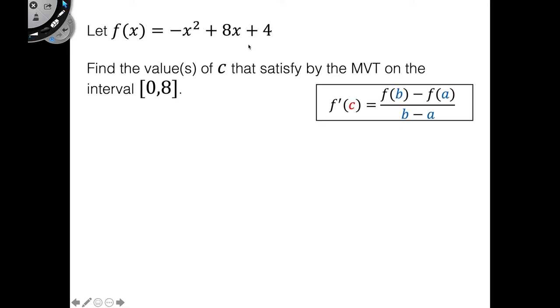So we're going to start with this function here, f of x equals negative x squared plus 8x plus 4, and we want to find the values of c that satisfy the mean value theorem on this interval, and the formula is there for your reference.